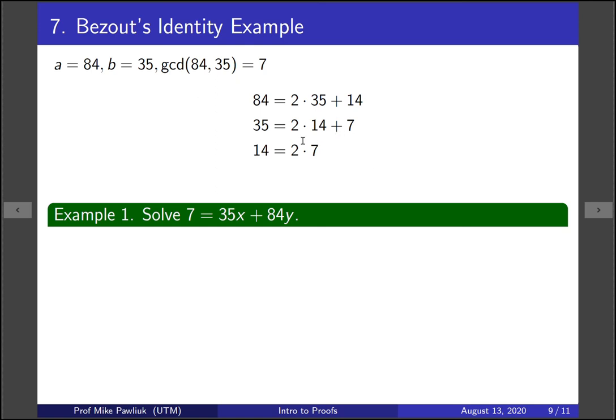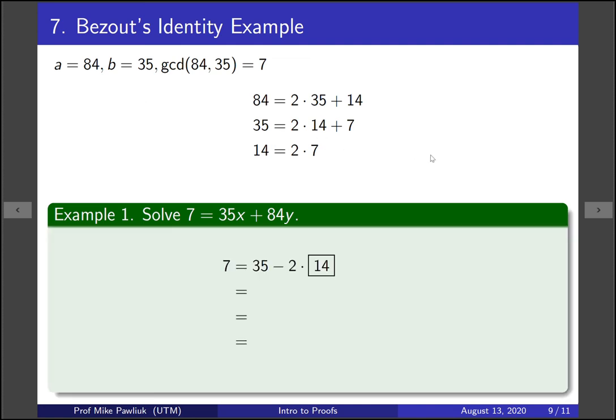So if we rearrange things, we can get 7 is equal to 35 minus 2 times 14. That's good for us, but what we really want is some collection of 35s plus some collection of 84s. This part's a 35, so we'll keep it, but now we want to replace the 14 by some combination of 35s and 84s.